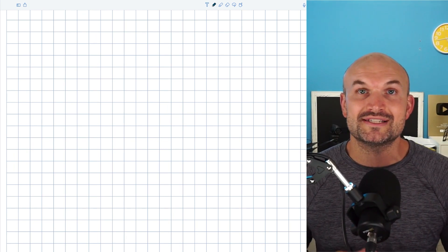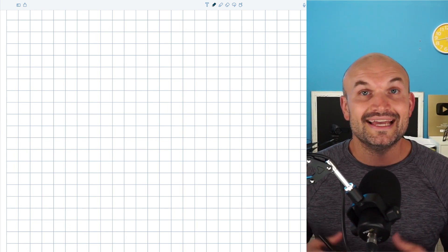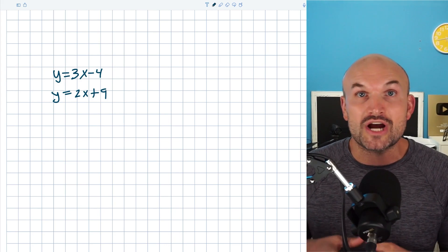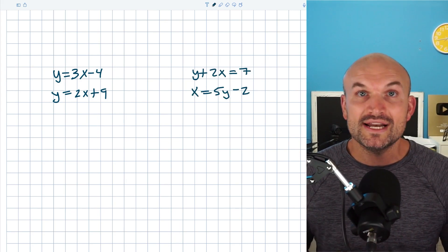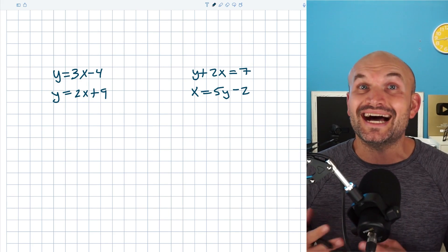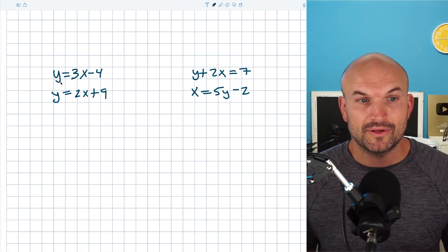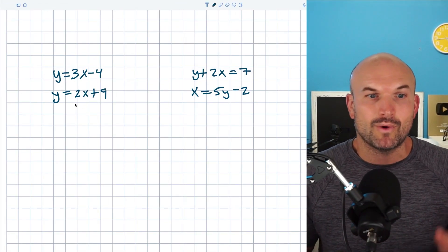So the only two examples I want my students to be able to solve a system of equations is one, when both equations are solved for the same variable, or two, one equation has a variable that is isolated. Okay, so you can see in this first example, I have y equals 3x minus 4 and y equals 2x plus 9.